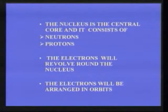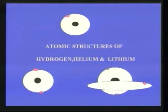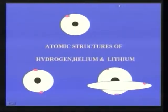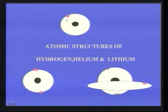You know from our tenth class knowledge, the orbits are S type, P type, D type orbitals. Now look at the atomic structure of hydrogen. Hydrogen has one electron. This is the nucleus and this is the first orbit — one electron is there for hydrogen.